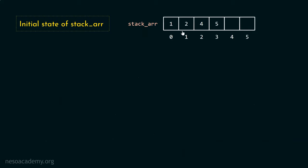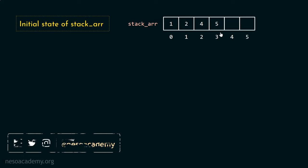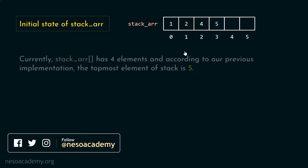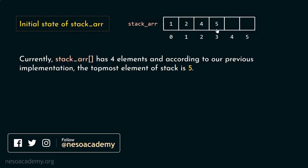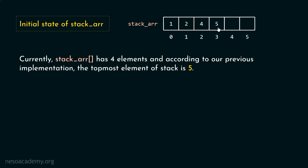This is the initial state of stack ARR — an array representing a stack. Currently, stack ARR has 4 elements. According to our previous implementation, the topmost element of the stack is 5. The newly inserted element must be the topmost element of the stack, and the topmost element changes with time.